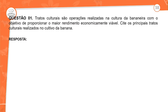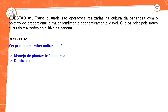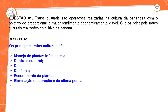Primeira questão: tratos culturais são operações realizadas na cultura da bananeira com o objetivo de proporcionar um maior rendimento economicamente viável. Quais os tratos culturais realizados no cultivo da banana? Os principais tratos culturais são: manejo de plantas infestantes, controle cultural, desbaste, desfolha, escoramento da planta, eliminação do coração e da última penca, ensacamento do cacho e colheita.